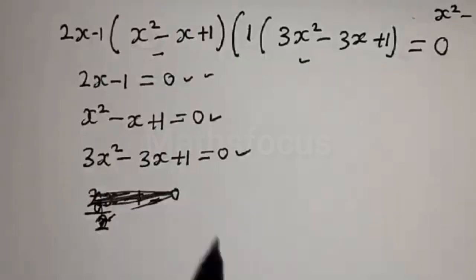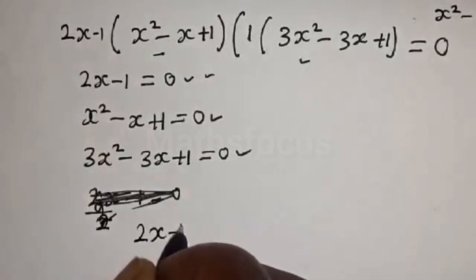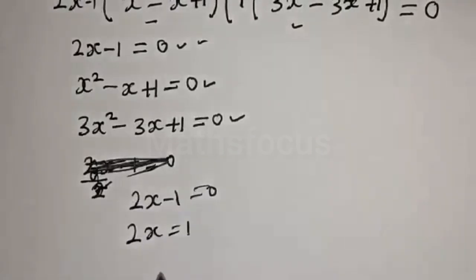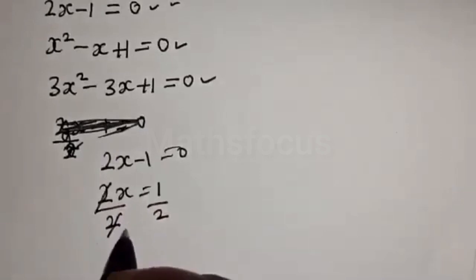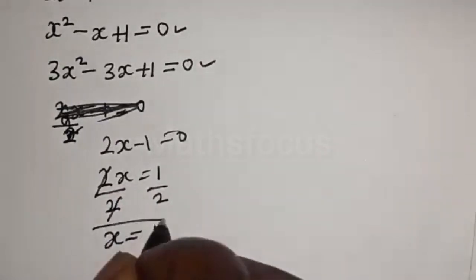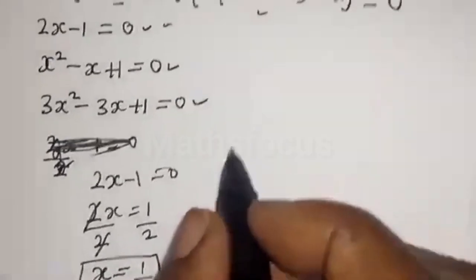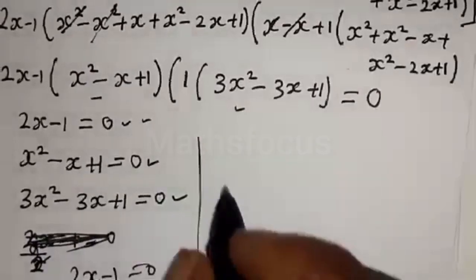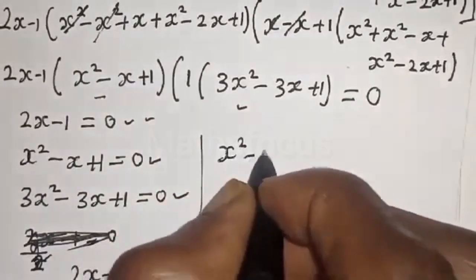x squared plus 1 equals zero — this is the third case. From the first case, 2x minus 1 is equal to 0, then 2x is equal to 1. Dividing both sides by 2, x is equal to 1 over 2.